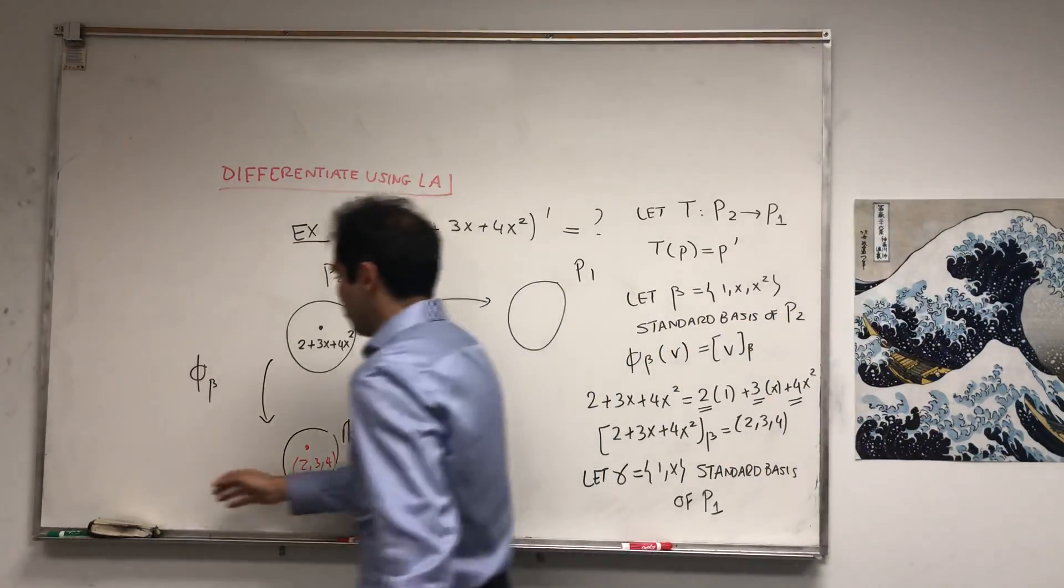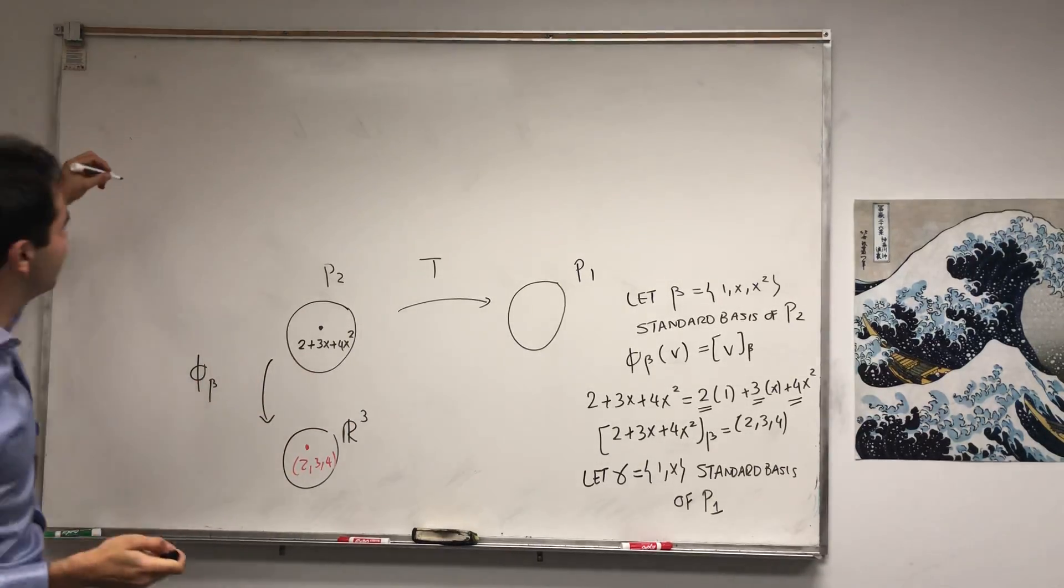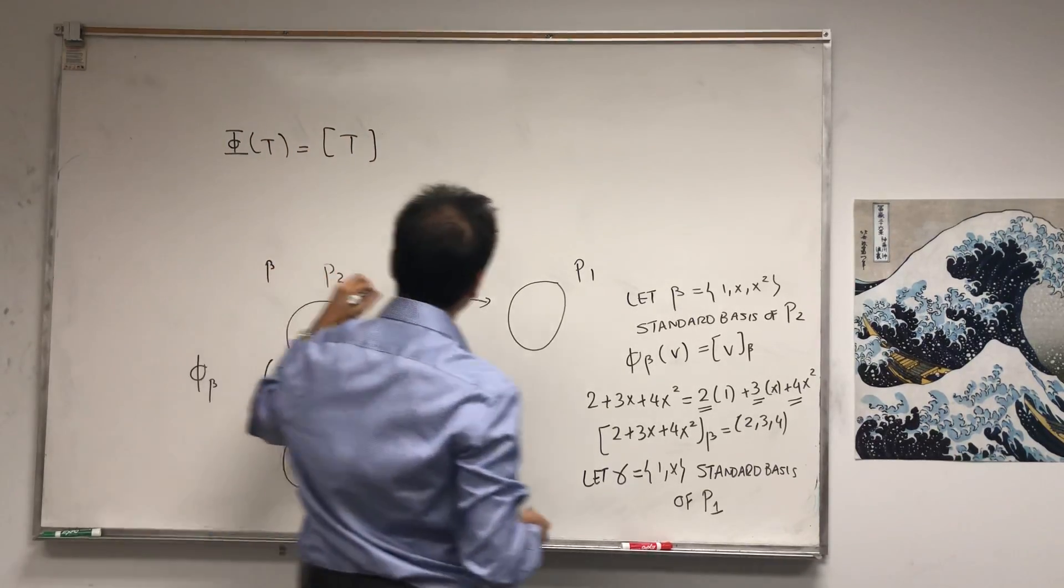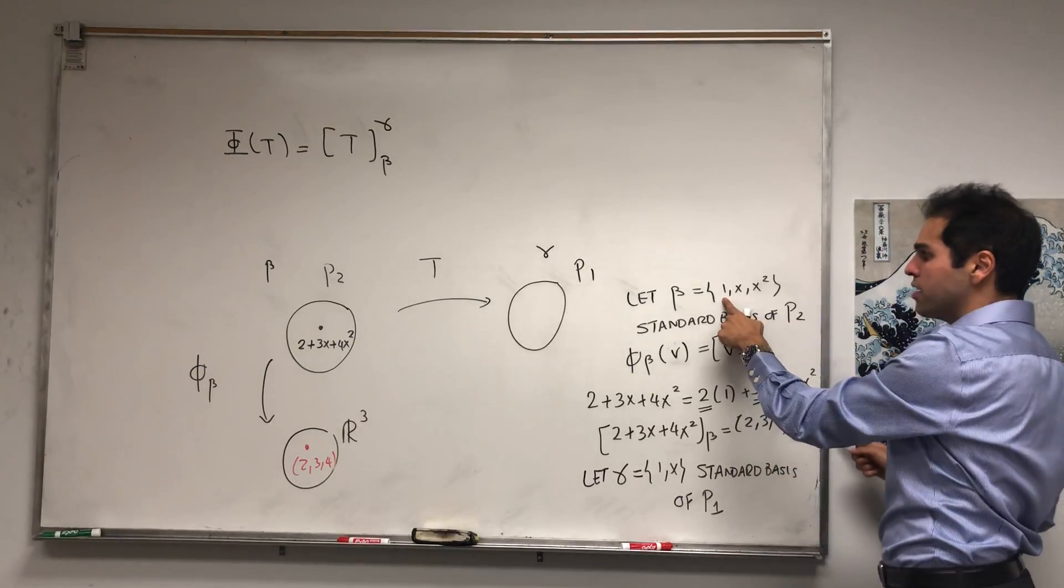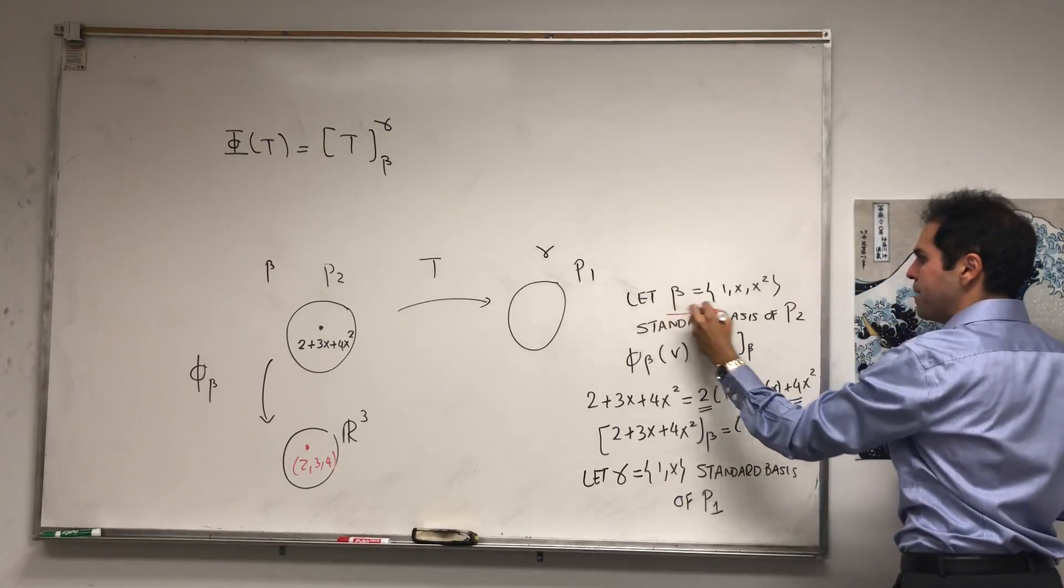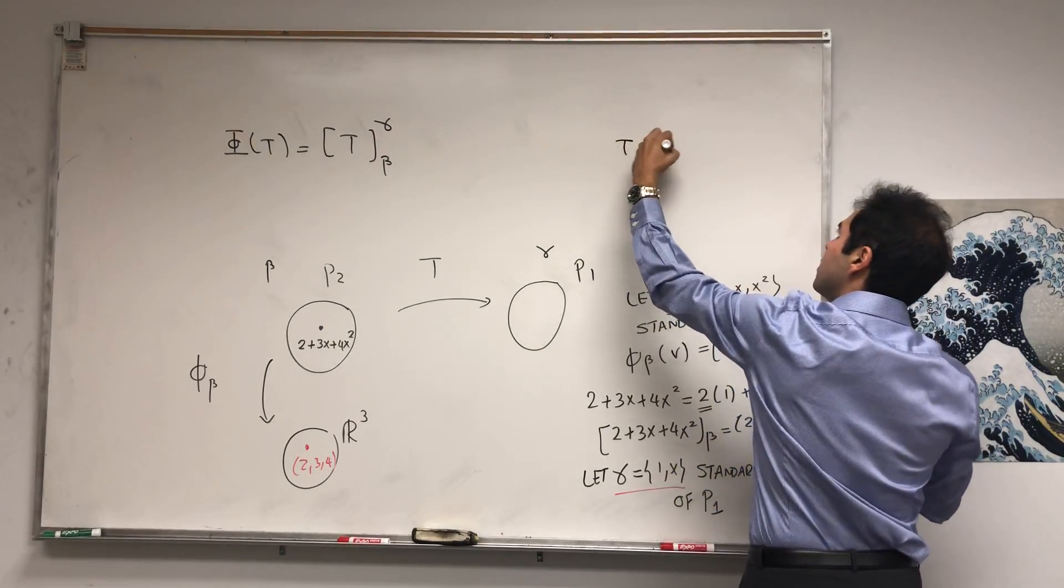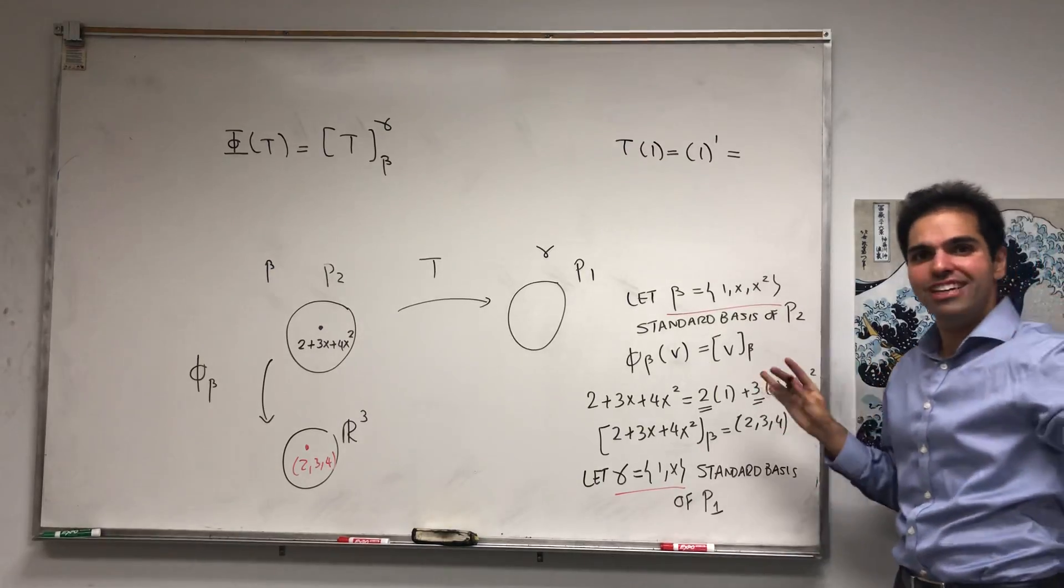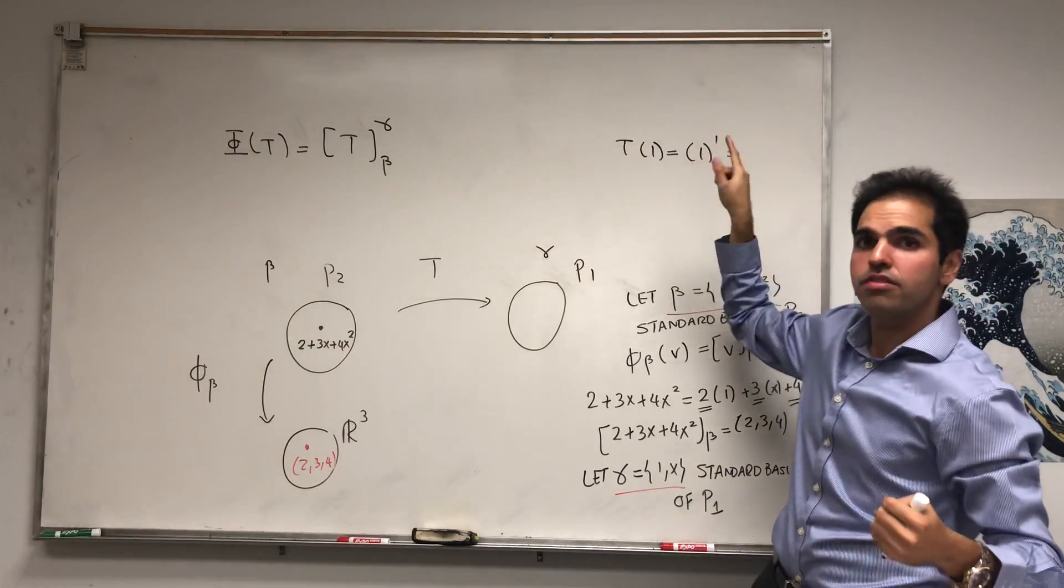But again, just to make stuff easy, let γ be the standard basis of P1, 1 and x. And now, we need to calculate the matrix of T, which I like to call φ_T, other people call it A. So let φ_T be the matrix of T with respect to those two bases. So this is basis β, this is γ. And how do you define T with respect to those bases? You just take T at the input vectors and express it in terms of the output vectors. So this is β, this is γ. So let's calculate T at 1, x, x squared.